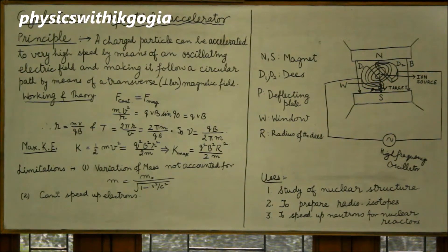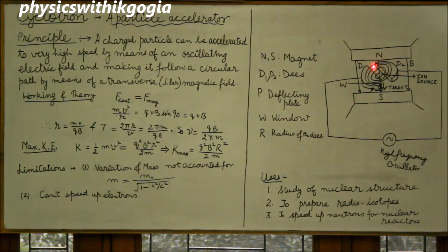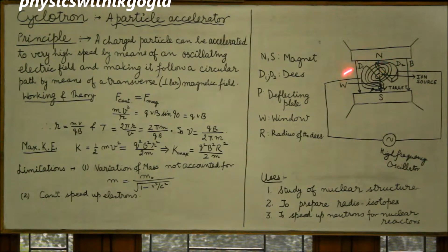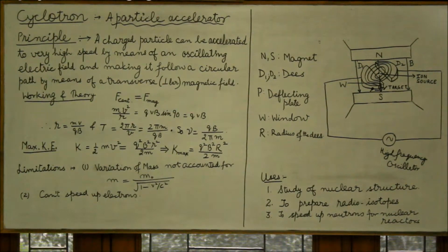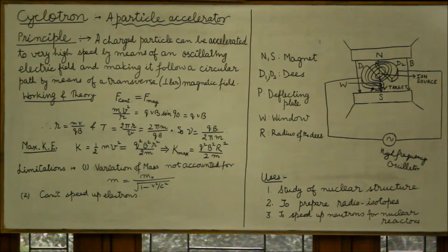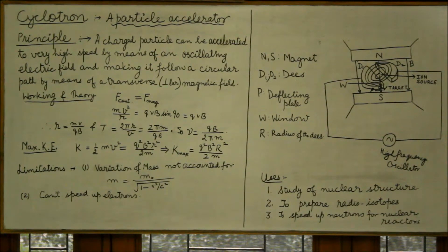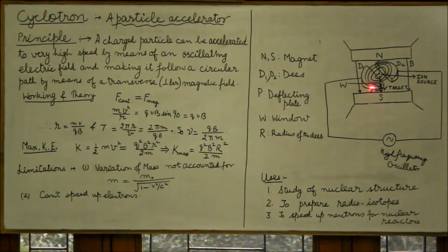Now the particle is pulled by D2 and enters D2 with a higher speed, completing a larger semicircle inside D2. As it comes out of D2, D1 becomes negative and it is again pulled in the gap. Inside the Ds it moves with uniform speed because the magnetic field cannot speed up a particle; in the gap it is speeded up by the oscillating electric field. This process is repeated until the particle attains sufficiently high speed and is pulled out with the help of a voltage applied to plate P, so that it moves out of the window and hits a target.